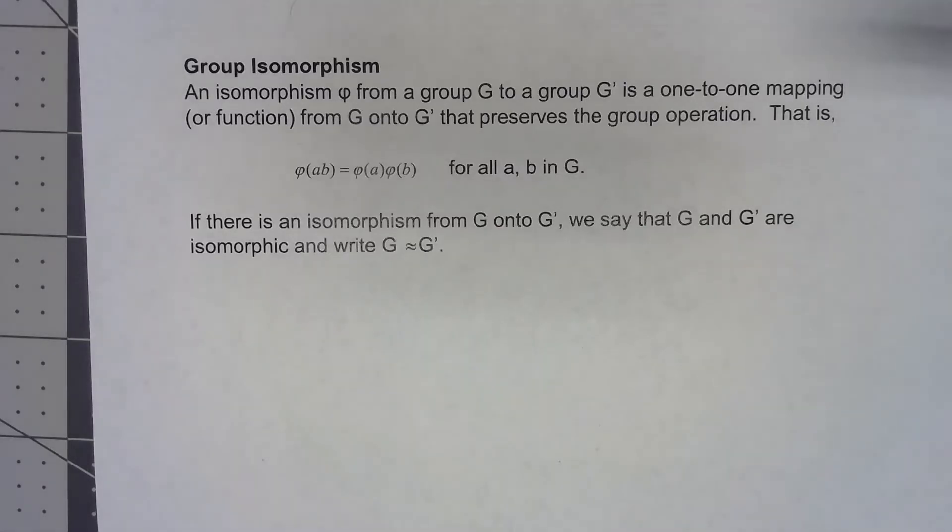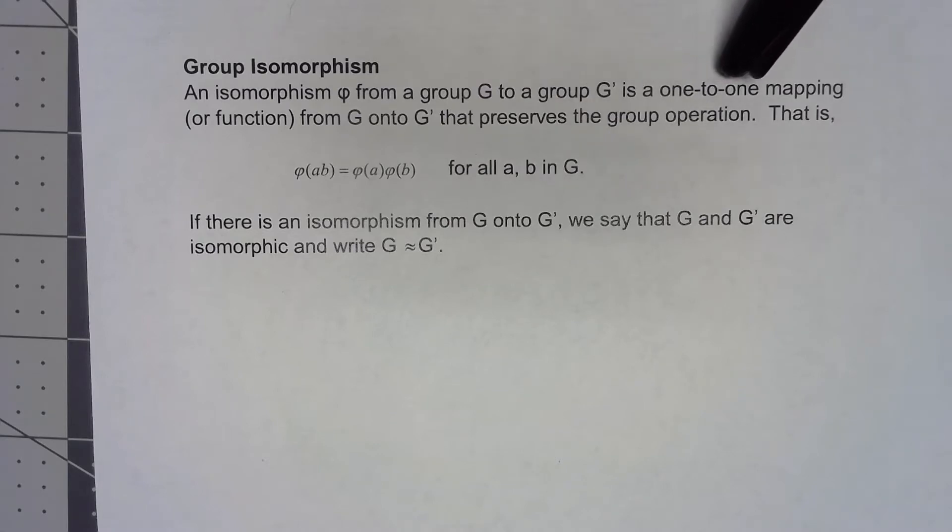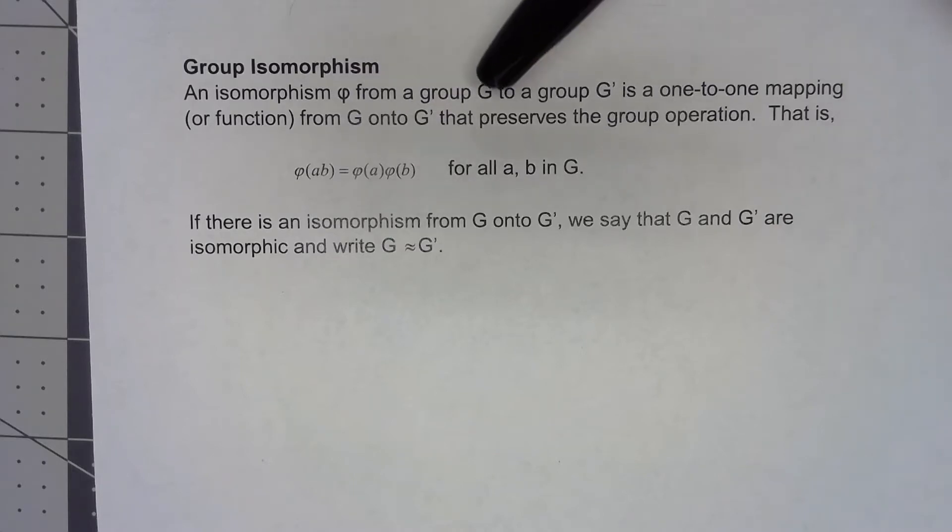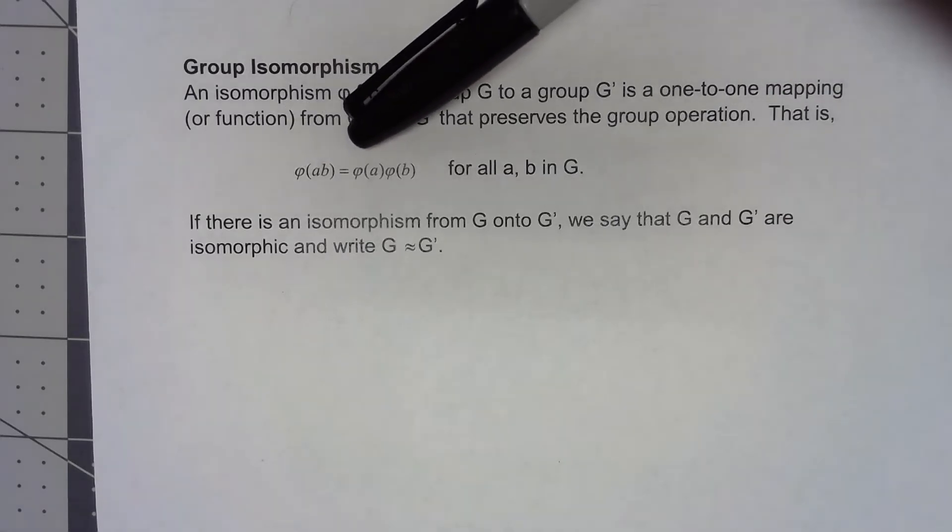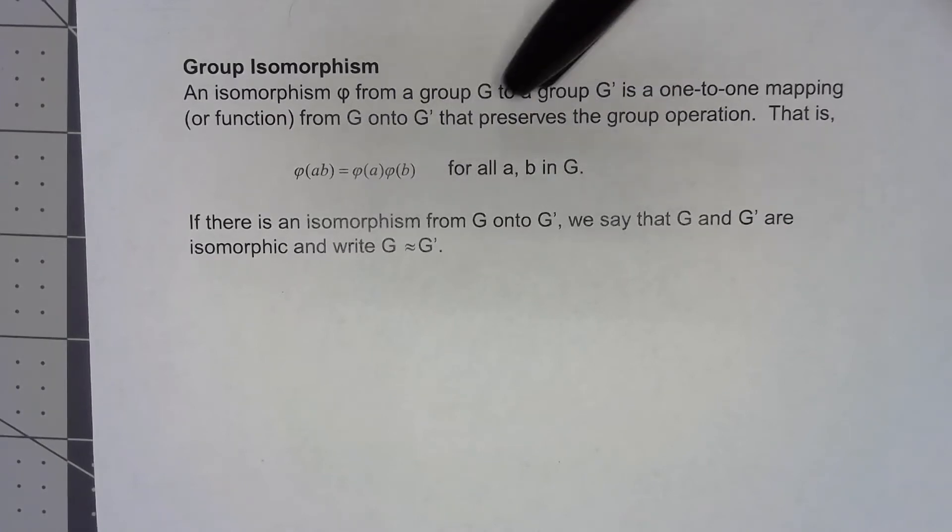Let's start with the formal definition of a group isomorphism. An isomorphism, phi is the typical letter for it, from a group G to a group G prime, is a one-to-one mapping from G onto G prime that preserves the group operation. Specifically, what that means is that phi of AB equals phi of A times phi of B for any A and B in the first group.